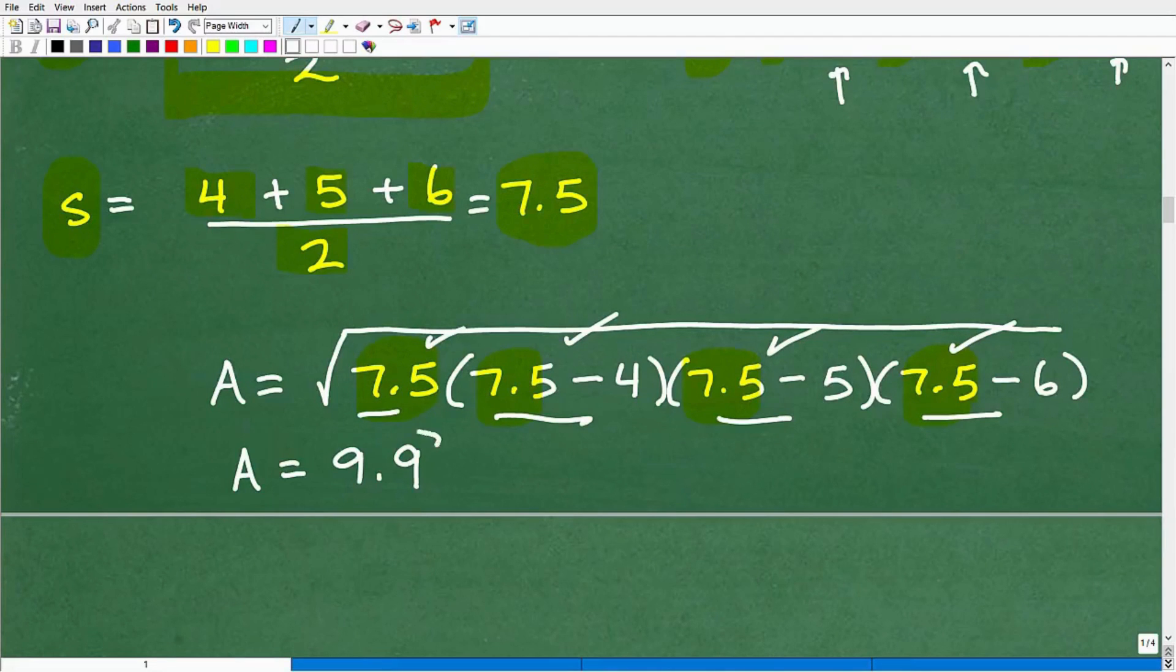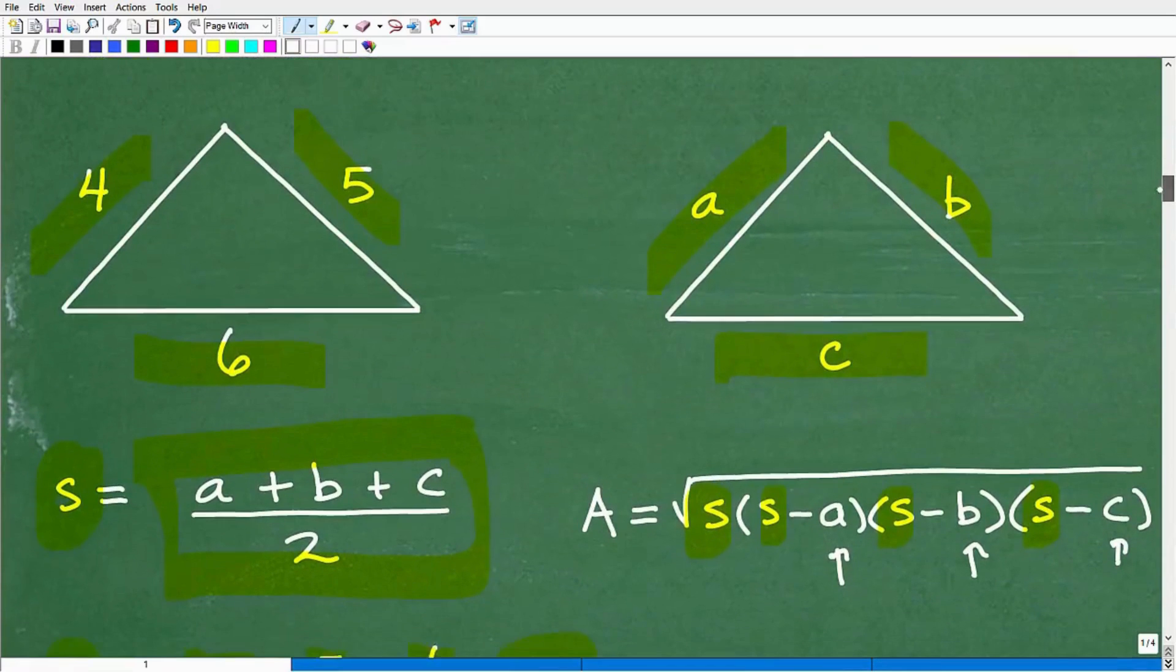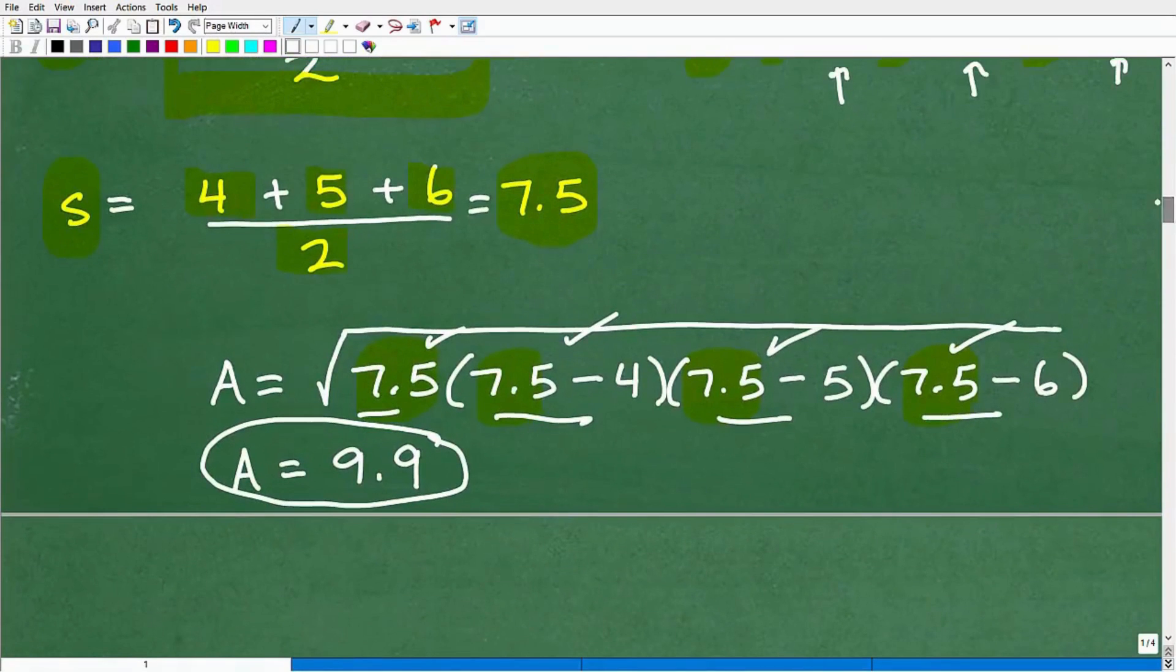So you're going to have this product. Once you have that, then you take the square root, and you're going to get 9.9, okay? And that is the area. Of course, we don't have any units of measure here. In other words, if this was like centimeters, for example, our area would be in centimeters squared. So just keep that in mind. But in this case, 9.9 is the answer.